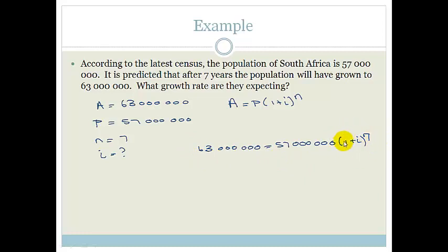So again, we want to get the bracket by itself. So what do we do? We divide both sides by 57 million. So before I do that, I'm going to cross out those zeros and cross out those zeros. I'm just dividing by 1,000. And let's divide by another 1,000 there and another 1,000 there. Life is good. So now we've got 63 over 57 is equal to 1 plus I to the power of 7. So to get rid of the 7, what do we do? We find the 7th root. We find the 7th root.